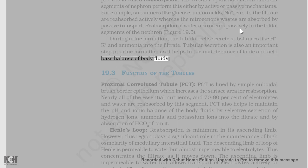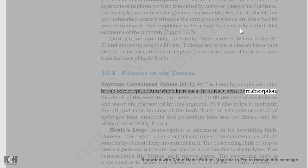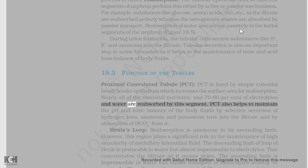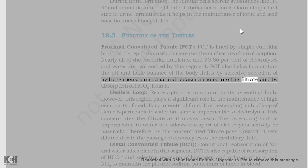The proximal convoluted tubule, PCT, is lined by simple cuboidal brush border epithelium which increases the surface area for reabsorption. Nearly all of the essential nutrients and 70-80% of electrolytes and water are reabsorbed by this segment. PCT also helps to maintain the pH and ionic balance of the body fluids by selective secretion of hydrogen ions, ammonia, and potassium ions into the filtrate and by absorption of HCO3- from it.